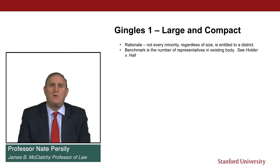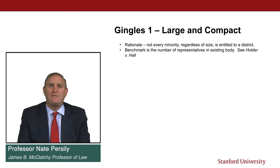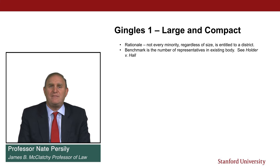The number of representatives in the existing system is the benchmark against which you measure vote dilution. In Mobile v. Bolden, there were three at-large City Council members, so the remedy would require showing that at least one district could be drawn with a majority-minority population — large and compact enough to give minorities an equal opportunity to elect their candidate of choice.